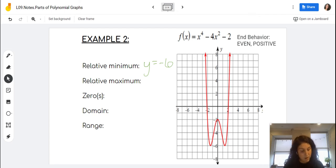My relative maximum, or my highest turning point, is here. It's hitting my y-axis at negative 2, so I'd be writing y equals negative 2.